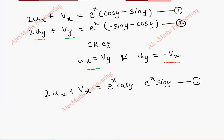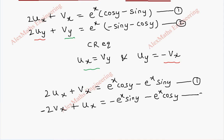The first equation is written as it is. For the second equation, 2uy becomes 2 times minus vx. So minus 2vx plus ux equals minus e to the power x sin y minus e to the power x cos y. This is our second equation.